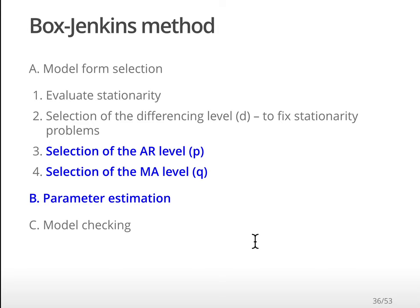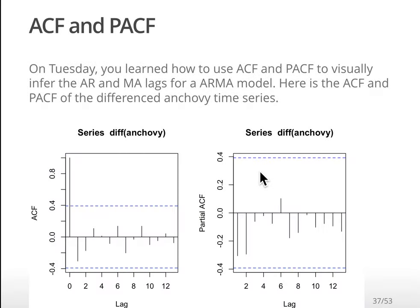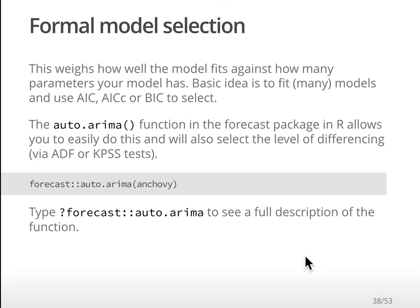Now we've figured out the level of differencing needed. Next, we fit the ARMA model to our transformed differenced data. On Tuesday, Mark talked about using the ACF and PACF to visually infer the model order. However, in practice when we're fitting these, we use model selection. ACF and PACF are useful to understand your data and check for anything strange, but when actually picking the model we use model selection - fitting a whole bunch of models and using model selection criteria. Fortunately, the auto.arima function in the forecast package will do all this for you.